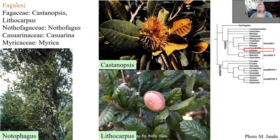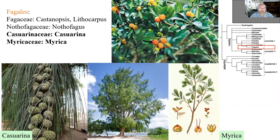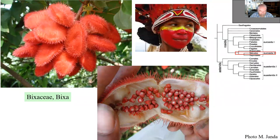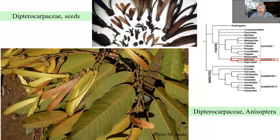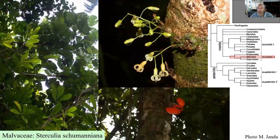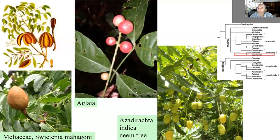Fagales have their own forest trees: Nothofagus, Lithocarpus, Castanopsis. Then Casuarina, which we know from primary succession, then Myrica. Bixaceae with Bixa, used traditionally for face paint in New Guinea. We are now in Malvales — Dipterocarpus, a huge element of Southeast Asian forests with typical seeds; we will talk about them later in greater detail. Malvales again: Sterculia, demonstrating cauliflory — flowers on the trunk. And Sapindales: Meliaceae, Mahogany timber, and then Aglaia and Azadirachta indica, the neem tree, known as an Indian medicinal tree.